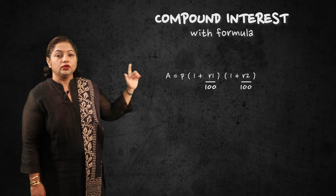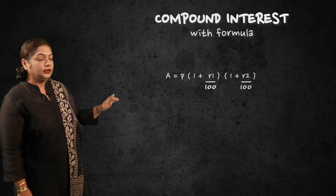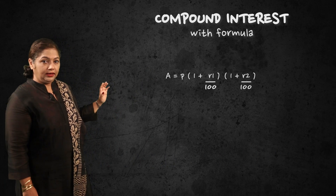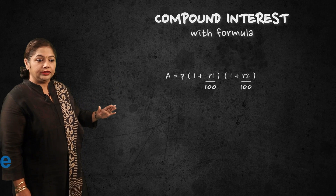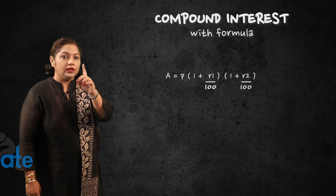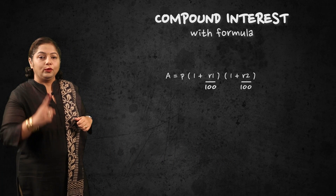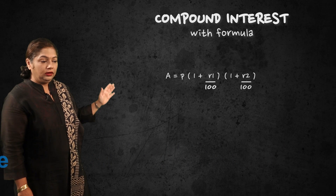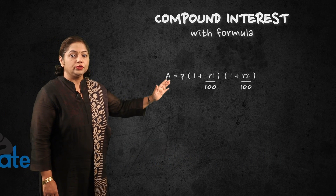Notice there is no raised-to power here, because for 2 years we have 2 different rates and we have already accounted for them with 2 brackets. Nobody should write raised to N because we have already accounted for 2 brackets. So A equals P into bracket 1 plus R1 upon 100, into bracket 1 plus R2 upon 100. Remember: P is written only once, P is not repeated.